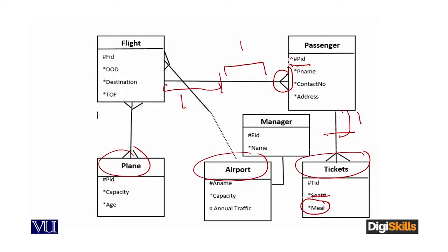Moving forward: airport to flight. One airport can have zero or more flights taking off and landing. The line is dotted, meaning an airport entity can exist even if no flight is currently taking off or landing. You should be very conscious about this distinction.